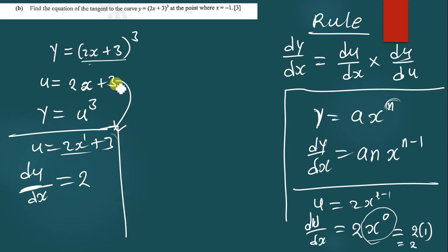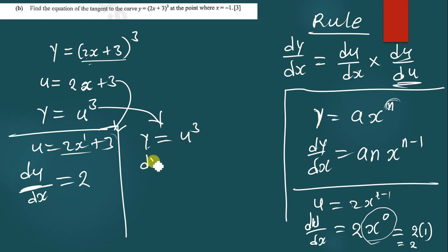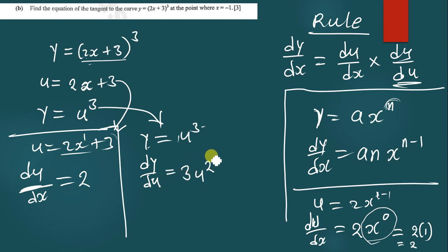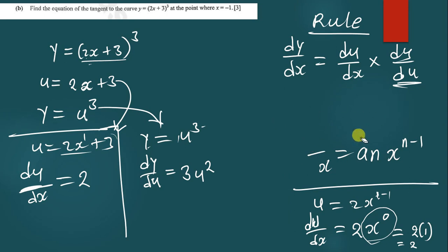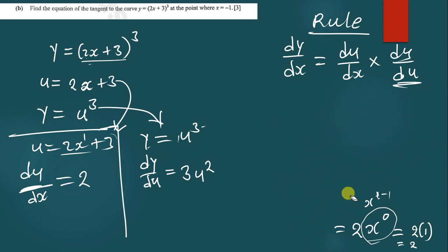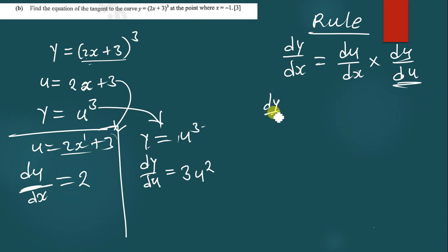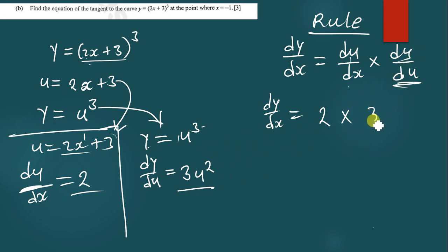Now let us find dy/du. From the equation, y equal to u to the power 3, dy/du is equal to 3 times 1 — that gives 3 — and we subtract 1 from 3, giving us u to the power 2. So dy/du is 3u squared. Therefore dy/dx equals du/dx times dy/du, which is 2 times 3u squared.